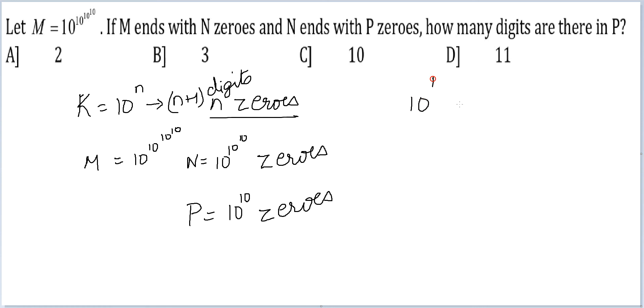Simply look at it. 10 raised to the power 1 has 2 digits, 10 square has 3 digits, 10 cube has 4 digits, so on and so forth.